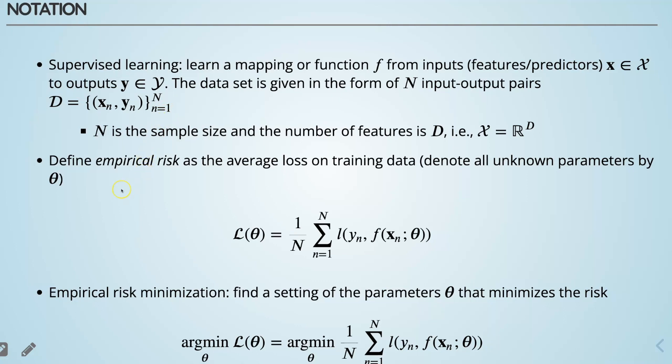For solving machine learning problems, we first need to form something known as empirical risk, which is the average loss on the training data. To show this is applicable from linear regression to more complex deep learning models, we show all unknown parameters by theta. We find this empirical loss as the sum of the loss functions evaluated at different training data points divided by the total number of points. This leads to solving the empirical risk minimization problem, known as ERM, where we want to find a setting of parameters theta that minimizes the risk.